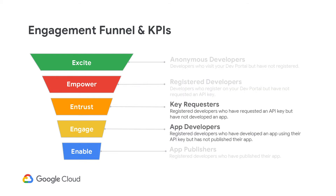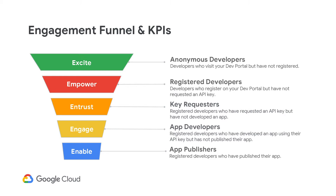Let's look at another example. Earlier, we discussed the need to track the time it takes a developer to reach their first API response. Not only should there be metrics around the actual duration, you should also track how many registered developers request an API key and use it to access your APIs. If developers are not feeling empowered or entrusted with your APIs, you may want to improve the self-service aspect of your program or run an event to get your developers more involved. This funnel can help identify gaps in your community that are preventing your API program from being successful.